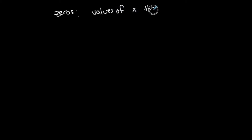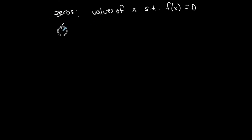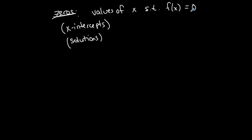The zeros of a polynomial function are the values of x such that f(x) equals zero. These are also known as x-intercepts, because an x-intercept is a point where the y-coordinate is zero. They're also called solutions to the equation, because we set it equal to zero and solve to find them. You might also hear them called roots of the equation.